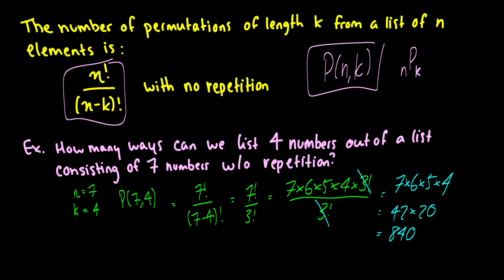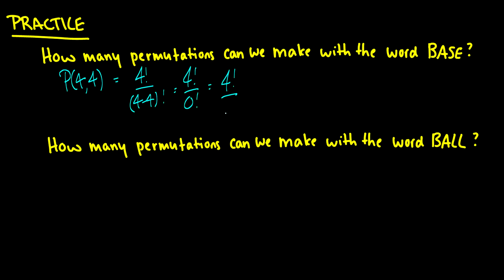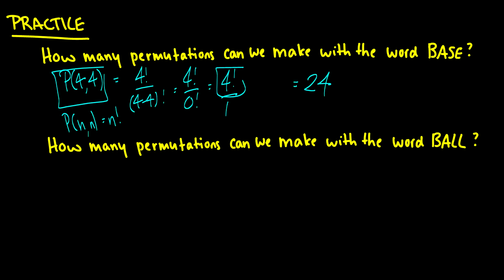If we have a 7-number list, we have 840 different ways to randomly list 4 of those numbers without repetition. Now, what if we were given the word 'base' and asked how many different ways can we rearrange the letters? We're arranging all 4 letters, so this is P(4, 4), which is 4 factorial over 4 minus 4 factorial — that's 4 factorial over 0 factorial, which is 4 factorial over 1. So P(n, n) is just n factorial, which equals 24.